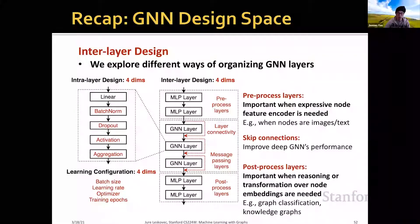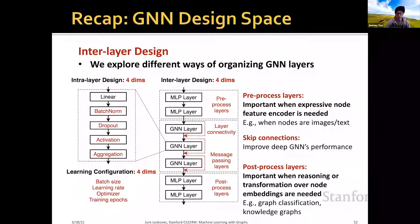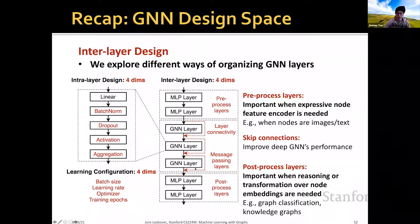Next, we design the interlayer connectivity. In the lecture, we introduced different ways of organizing GNN layers. In this work, we consider adding some pre-processed layers and post-processed layers in addition to the GNN layers, which can jointly form a complete graph neural network.